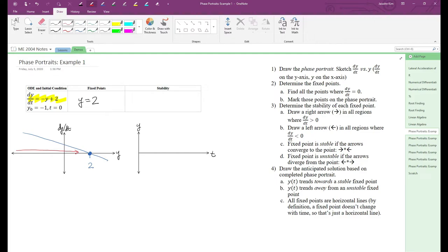And from 2 to infinity, we draw a left arrow because dy/dt is always negative. The arrows converge to the fixed point, so it's stable. If the arrows had diverged from the fixed point, it would be unstable.